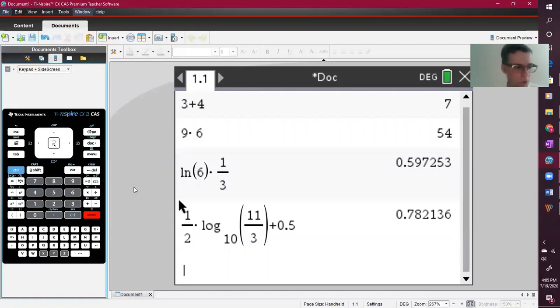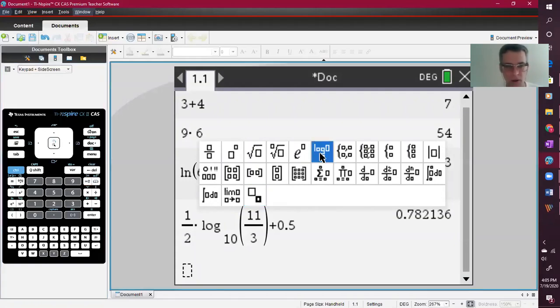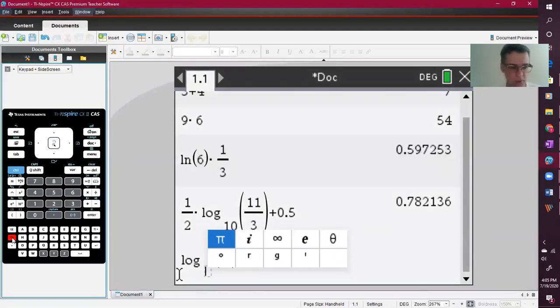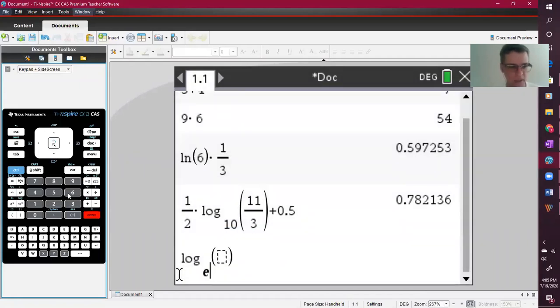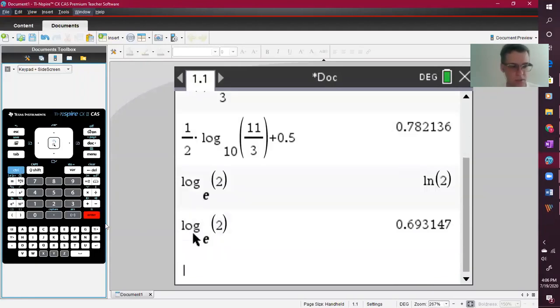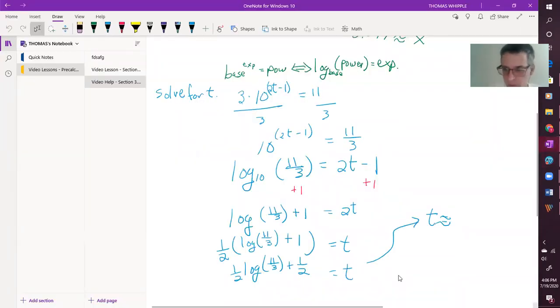Before we go off of this, I did want to point out there is one other place you can find the log application. If you hit this template button right next to the nine, you will see there is a log option up here. So if you click on that, it gives you that. Now I'm wondering if I put E here, if that would change it to natural log. So like if I did log based E of two, let's see what it gives me. And see how it calls that ln of two. And then of course I can still get an approximation.